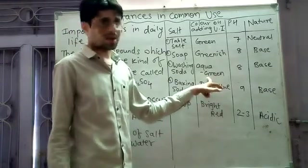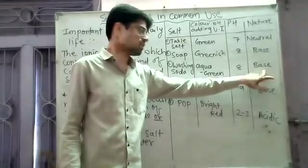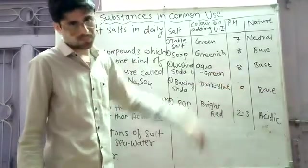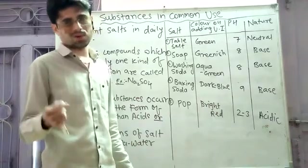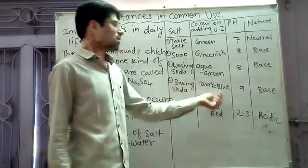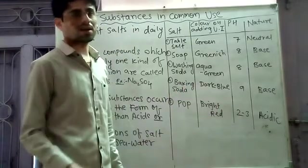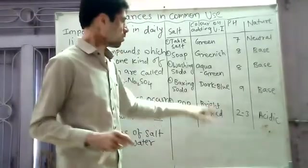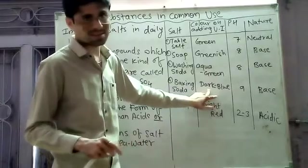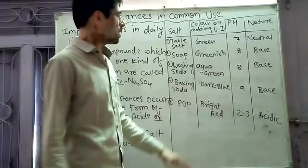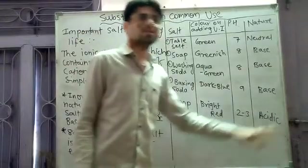This is the basic nature of the pH value, which is approximately 8 — values like 7.8, 7.7, 7.9, and 8. Next, baking soda. Baking soda tested with a universal indicator in aqueous solution shows a basic nature with a pH value around 8.